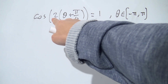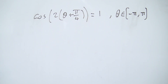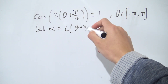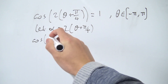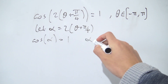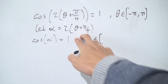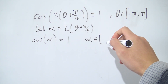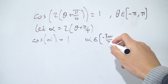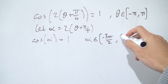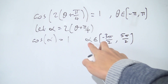For the next example, we have something more complex inside our cosine — not only a dilation factor but also a shift. Same approach as before: let's do a substitution. Let alpha equal 2θ + π/4. Rewriting the equation, we get cos(α) = 1. Don't forget to change the domain. Plugging in the endpoint −π: α = 2(−π) + π/4 = −3π/2. Plugging in π: α = 2(π) + π/4 = 5π/2. So the domain for alpha is [−3π/2, 5π/2].